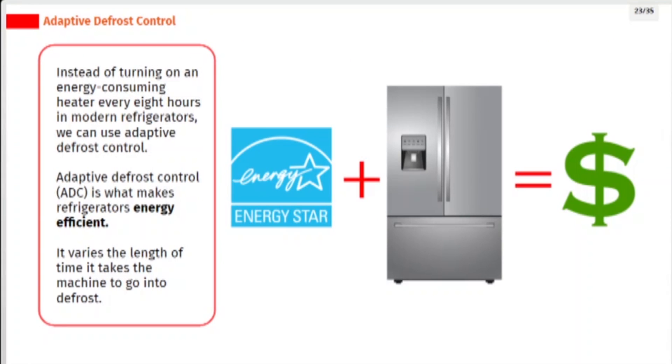Instead of turning on an energy consuming heater every eight hours in modern refrigerators, we can use adaptive defrost control. Adaptive defrost control (ADC) is what makes refrigerators energy efficient. It varies the length of time it takes the machine to go into defrost.